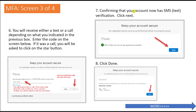After entering the code, you'll receive a screen showing that your account is now SMS verified, meaning they texted you and you responded. Click next. This final step confirms the whole process — it says your default sign-in method is a phone, shows your phone number, and then you click next.